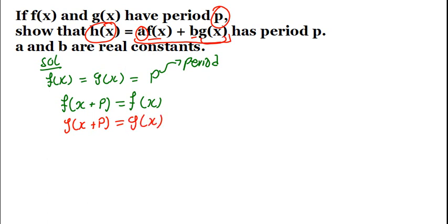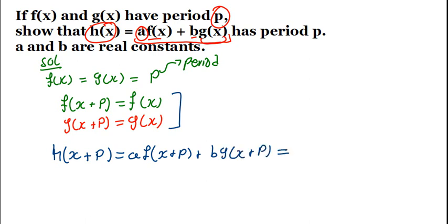this being true actually simplifies everything. If this is true, and we have been told it's true, it simply means I can say h(x+p) equals a times f(x+p) plus b times g(x+p), where a is a constant. This does not change anything and still ends up giving us what?